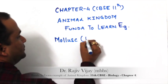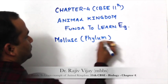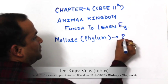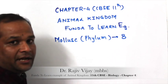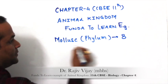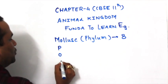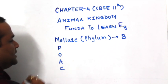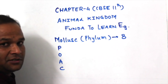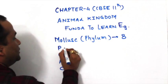Mollusk phylum: the total examples given in the CBSE textbook is 8. The fundamental mnemonic is POAC, where P, O, A, C stand for the first four examples.